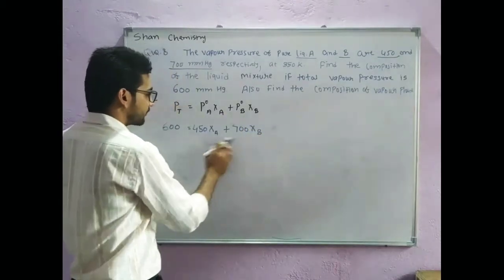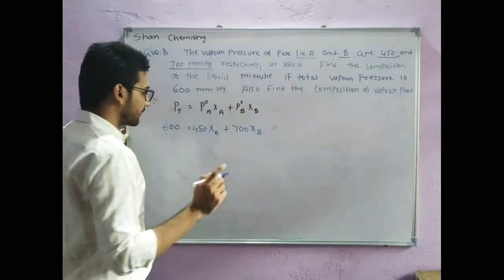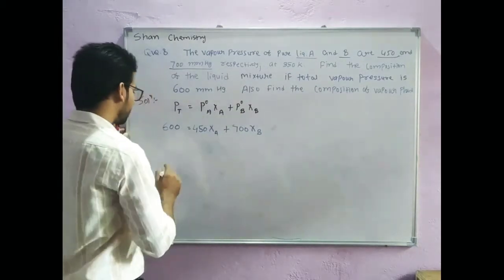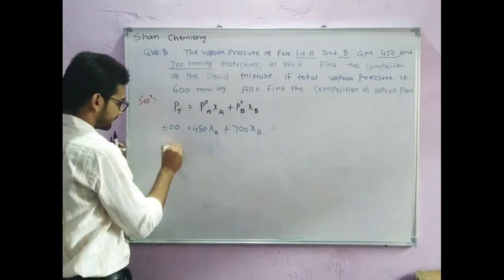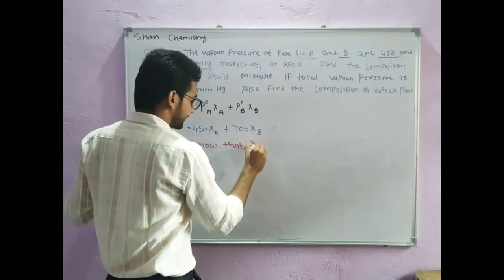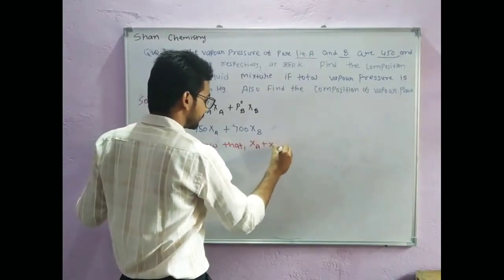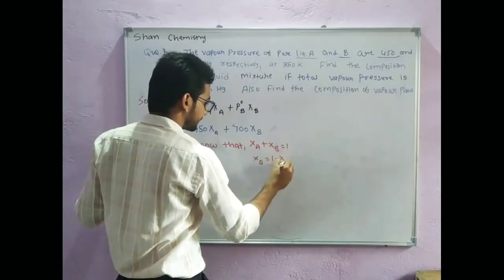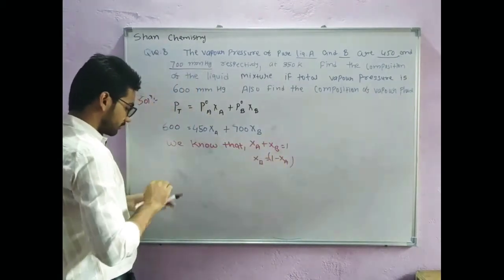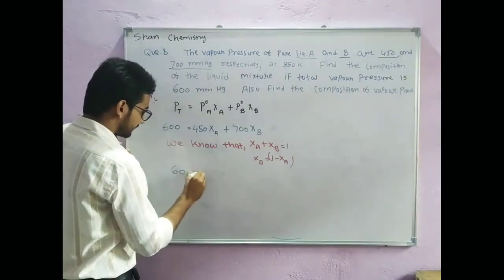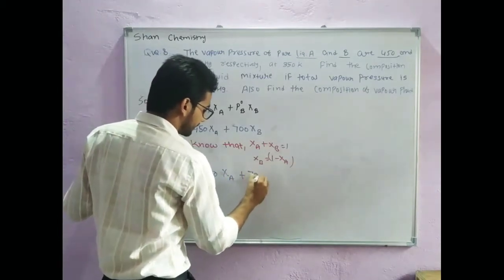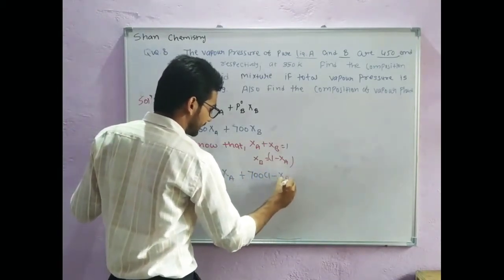Now, students, we need to find the values of X_A and X_B. We know that X_A plus X_B is equal to 1, so X_B is equal to 1 minus X_A. Substituting this into our equation gives: 600 is equal to 450·X_A plus 700 times (1 minus X_A).